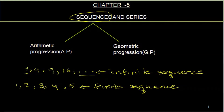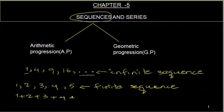We have to change the sequence. One sequence goes to the final sequence. For the final sequence we change: one, two, three, four, five. We change to: one plus, two plus, three plus, four plus, five plus. So this is the series.